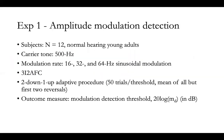We have three tasks for temporal envelope processing. The first one is amplitude modulation detection. We had 12 normal hearing young adults listen to carrier tones at 500 Hz, modulated at 16, 32, or 64 Hz. We measured the modulation detection threshold using a 3-interval 2-alternative forced choice paradigm under an adaptive procedure.